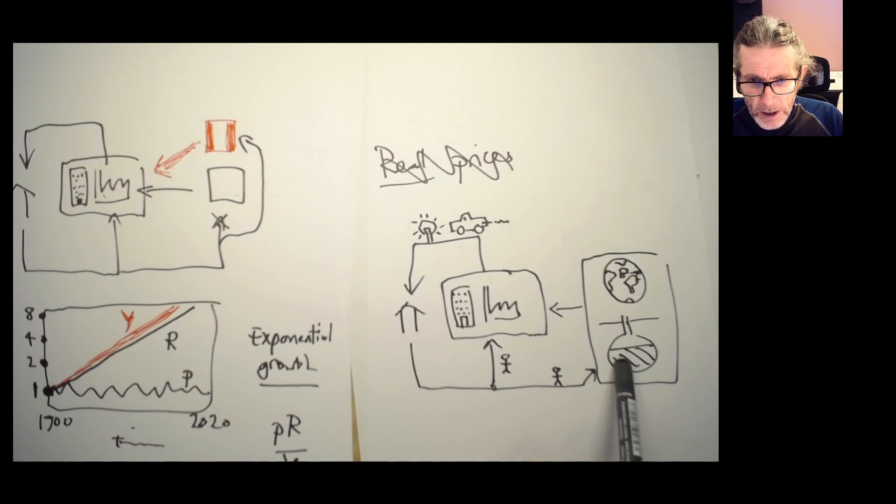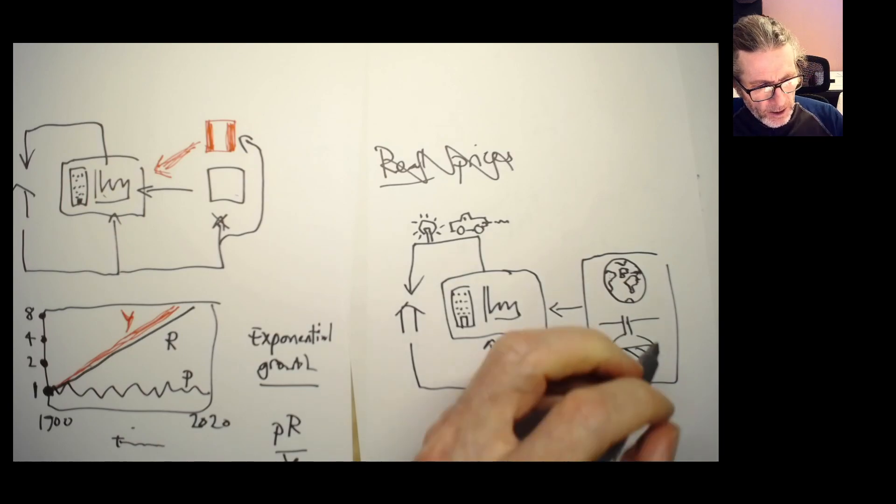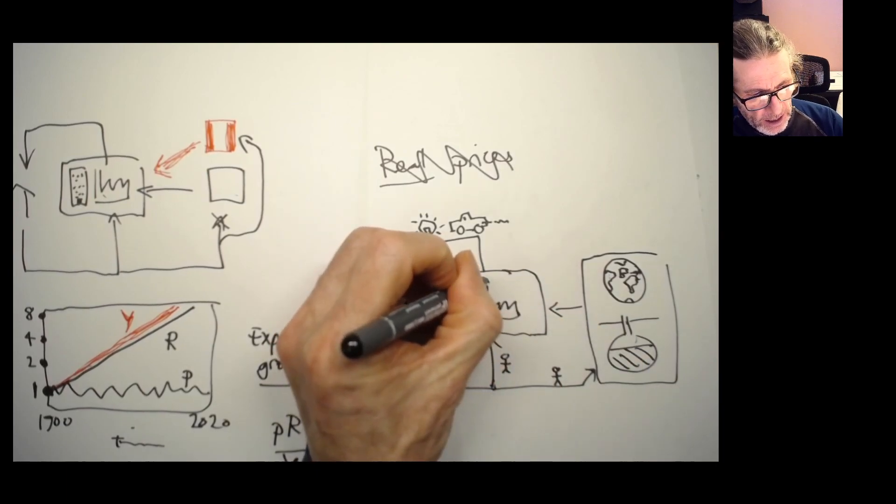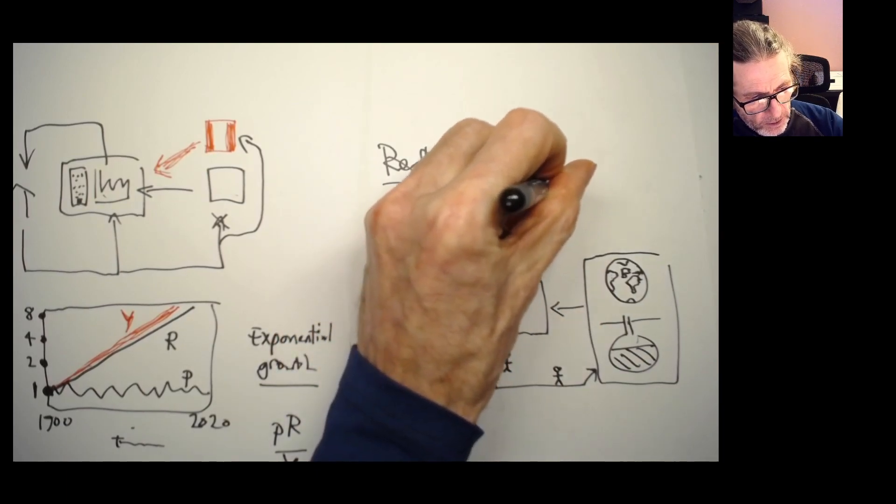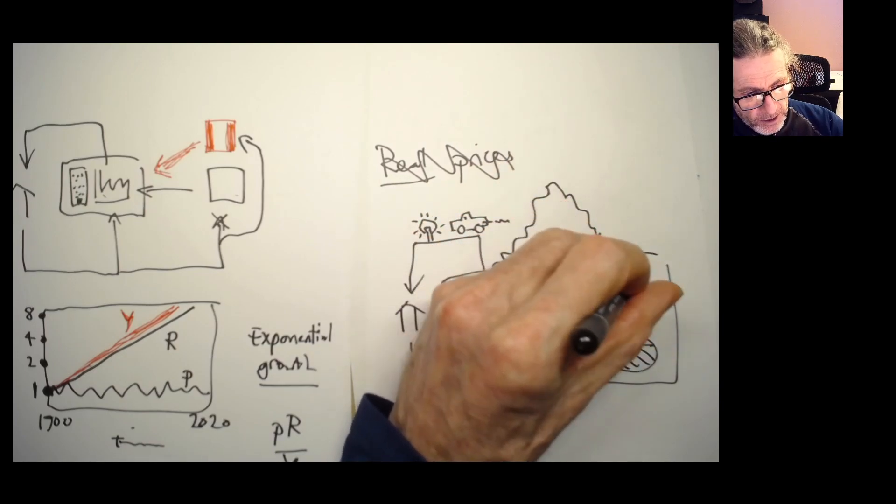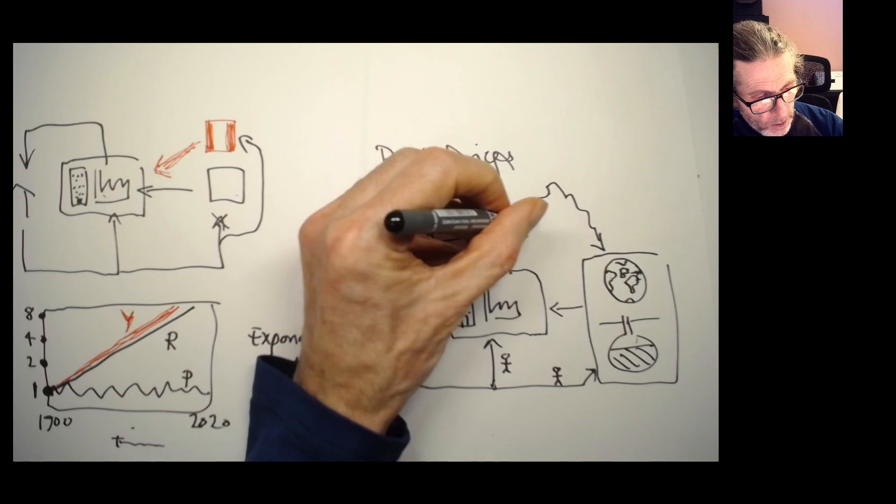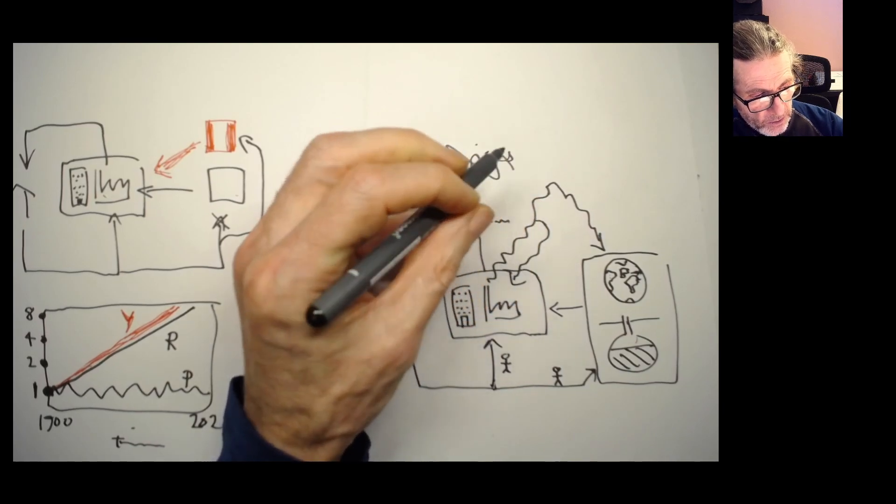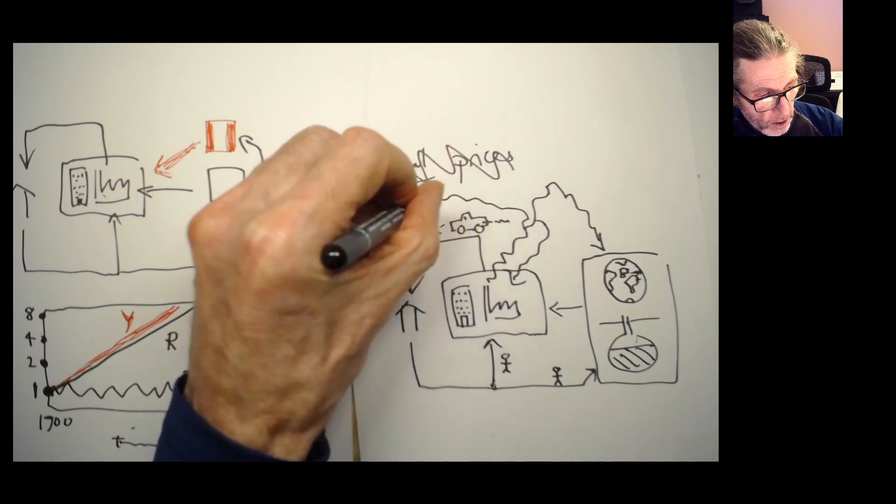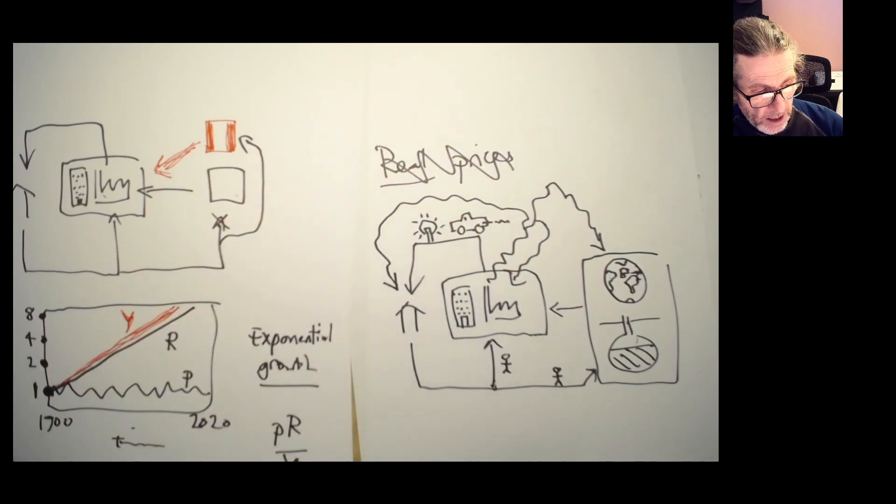But what about pollution? What about the use of this oil leading, for instance, to pollution, which then comes back down and trashes our land, potentially trashes our ability to produce and also comes down on the households and affects their health? How do we deal with that? And that's what the next lecture is going to be about. And that's the end of this introductory video.